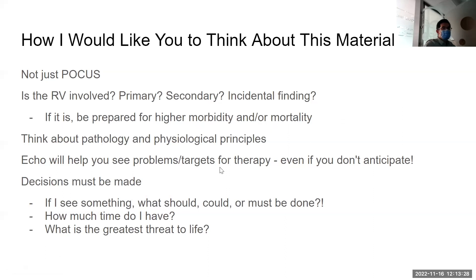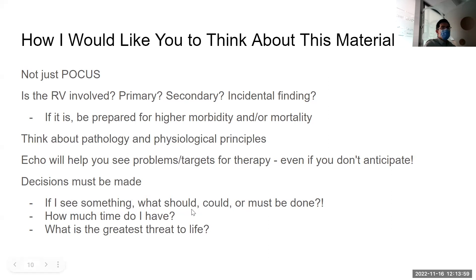Echo helps us see problems and targets for therapy, even when we don't anticipate them. If you echo people regularly, you'll find stuff that you didn't really think about, which is helpful — it minimizes blind spots. Decisions must be made: if you see something, what should or must be done? I think about how much time I have, and what is the greatest threat to life in terms of my rank order of priorities. I'll talk a little bit about therapies, including when to consider an RVAD or ECLS. But this is more about: if I see this on echo, what am I thinking about for interventions and how to follow.